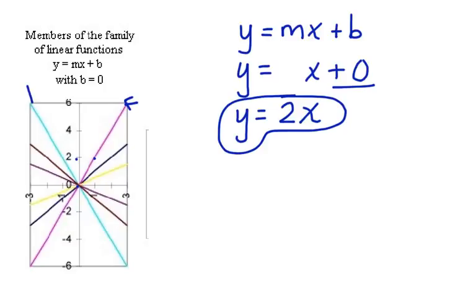What about this light blue one? Let's take a look at how to work with that. Again, y equals mx plus b. y equals something x plus 0. Again, rise over run.